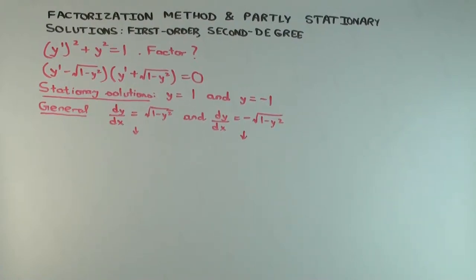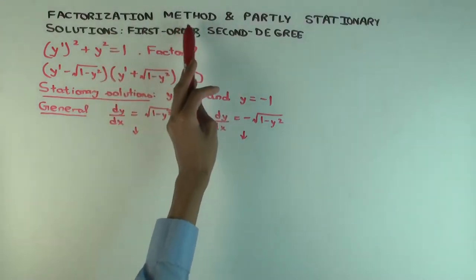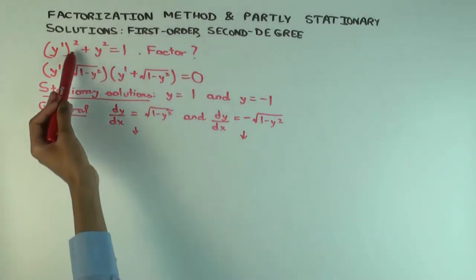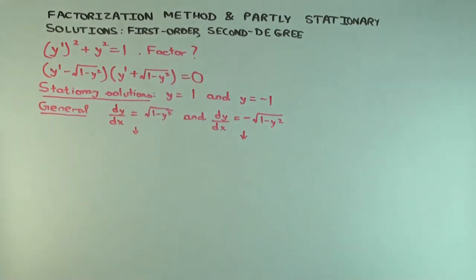This talk is about an interesting example where we use a factorization method to solve a first-order, second-degree differential equation. We find there are a number of solutions that are partly stationary, and we have an interesting way of trying to combine various types of solutions. Let's just get into it.